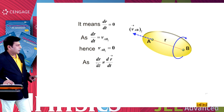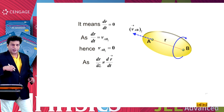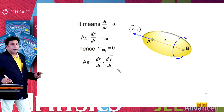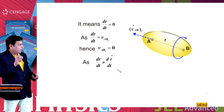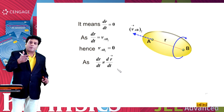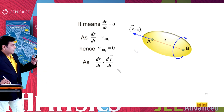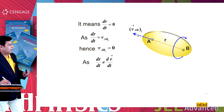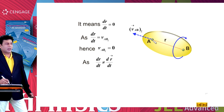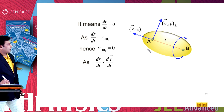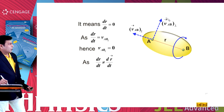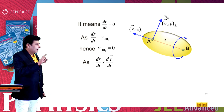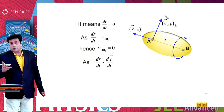Here dr/dt is the rate of change of separation between the two points, whereas d(r-vector)/dt is the relative velocity vector of A with respect to B. That means if this relative velocity has a component parallel to AB, it may also have a component perpendicular to AB. So that perpendicular component may not be equal to 0, meaning the relative velocity of point A with respect to B may not be equal to 0.